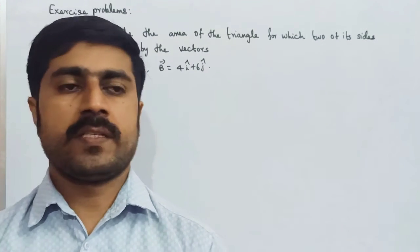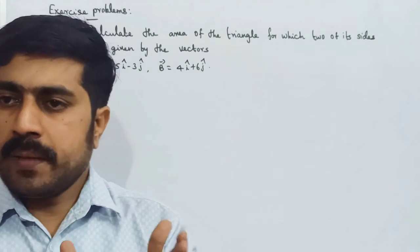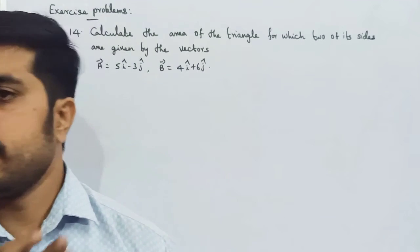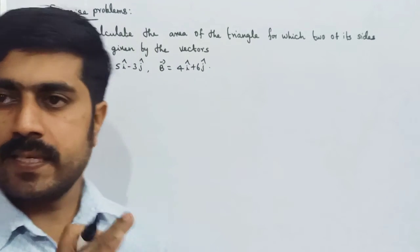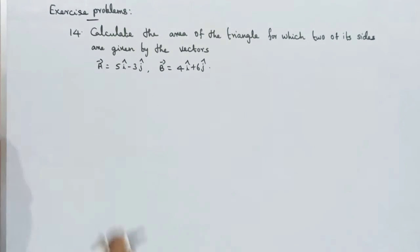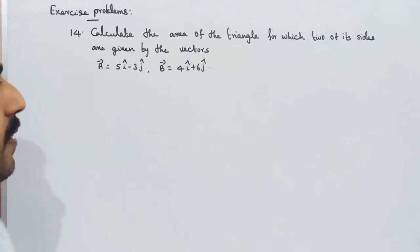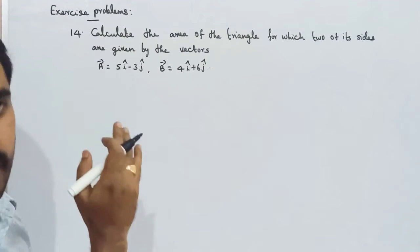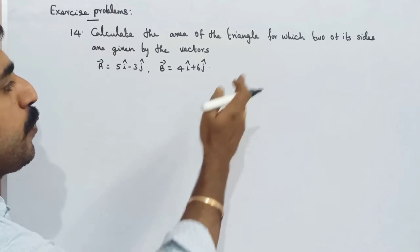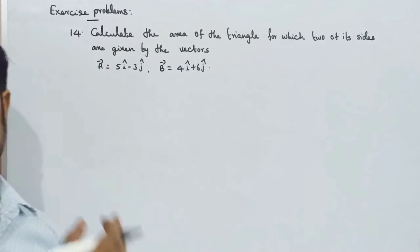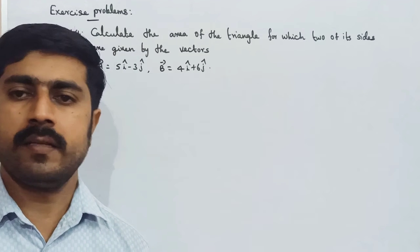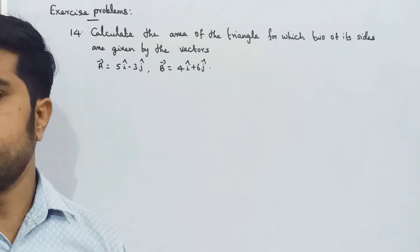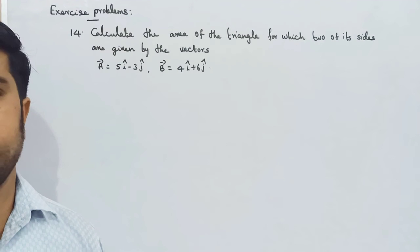Hi students. In the 11th physics lab, 2nd unit, we will solve one more exercise problem — problem number 14. Calculate the area of the triangle for which 2 of its sides are given by vectors. One triangle has 3 sides, and 2 sides can be expressed in vector form.